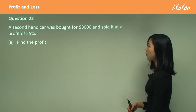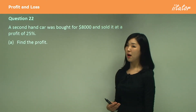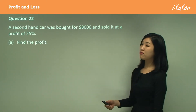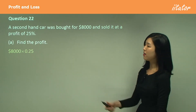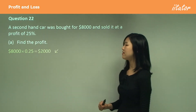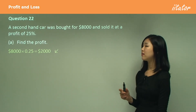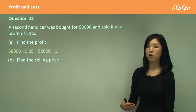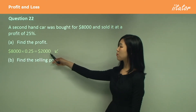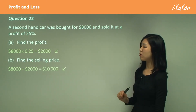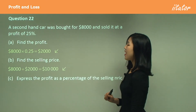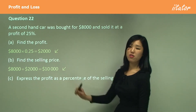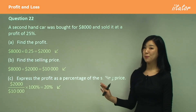A secondhand car was bought for $8,000 and sold at a profit of 25%. Although it's secondhand, they're making a profit and selling it for more. To find the profit, multiply $8,000 by 25% to get $2,000. For the selling price: since we're making a profit, the selling price must be larger than the cost price, so we add $2,000 to $8,000. For part C, to express the profit as a percentage of the selling price: put $2,000 over the selling price and multiply by 100, giving 20%.